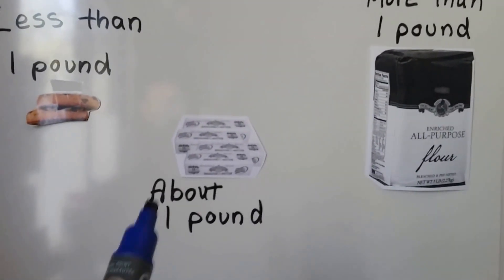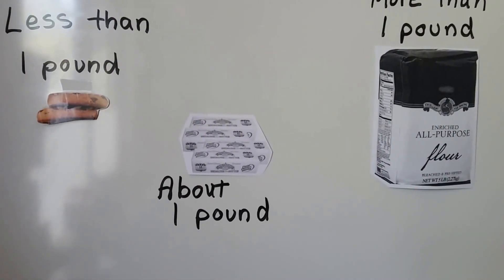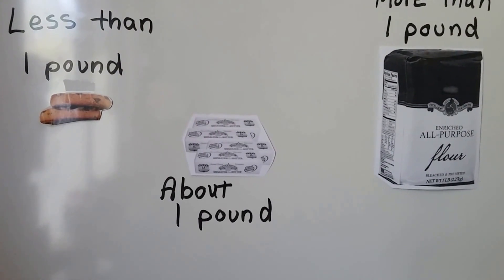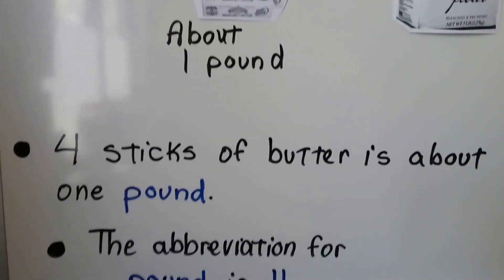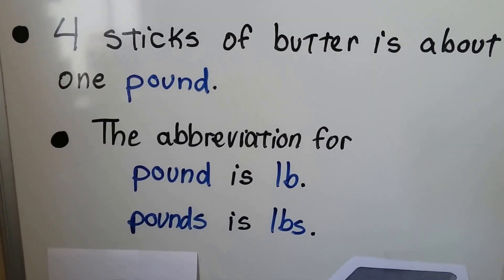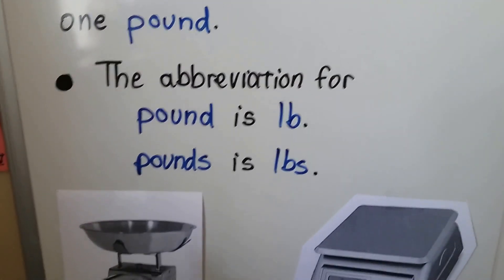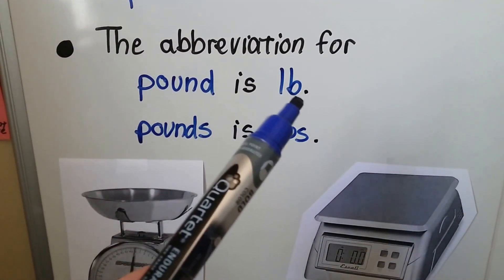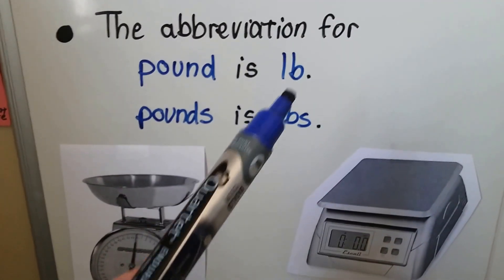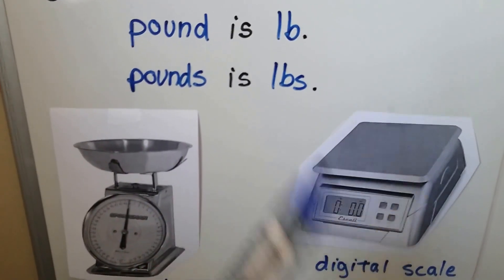So keep in mind that a box with four sticks of butter in it is about one pound. It's about one pound for four sticks of butter. Now the abbreviation for pound is LB, a lowercase L and a lowercase B. For pounds, it would be LBS.